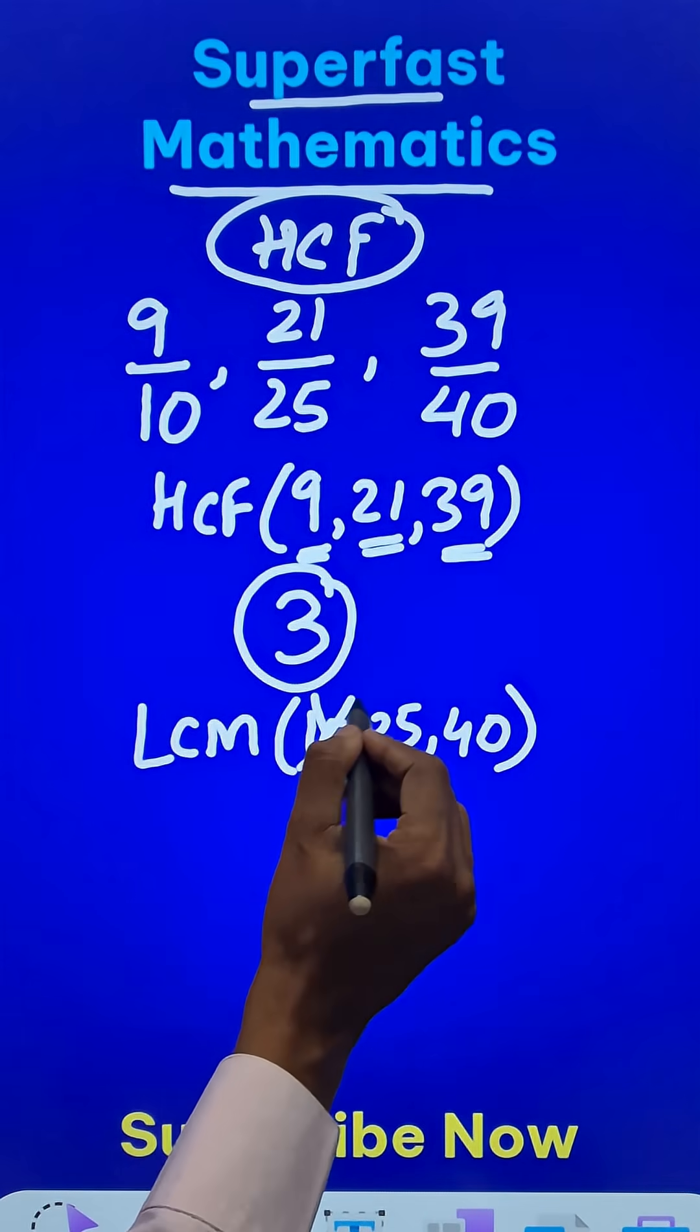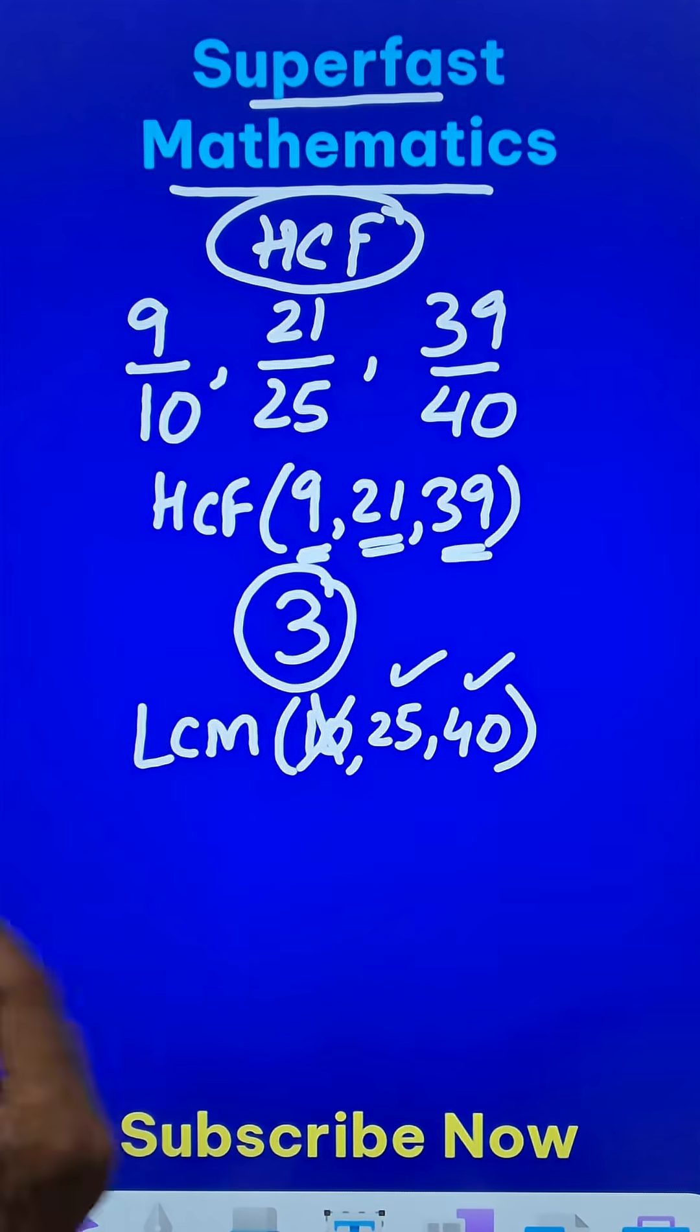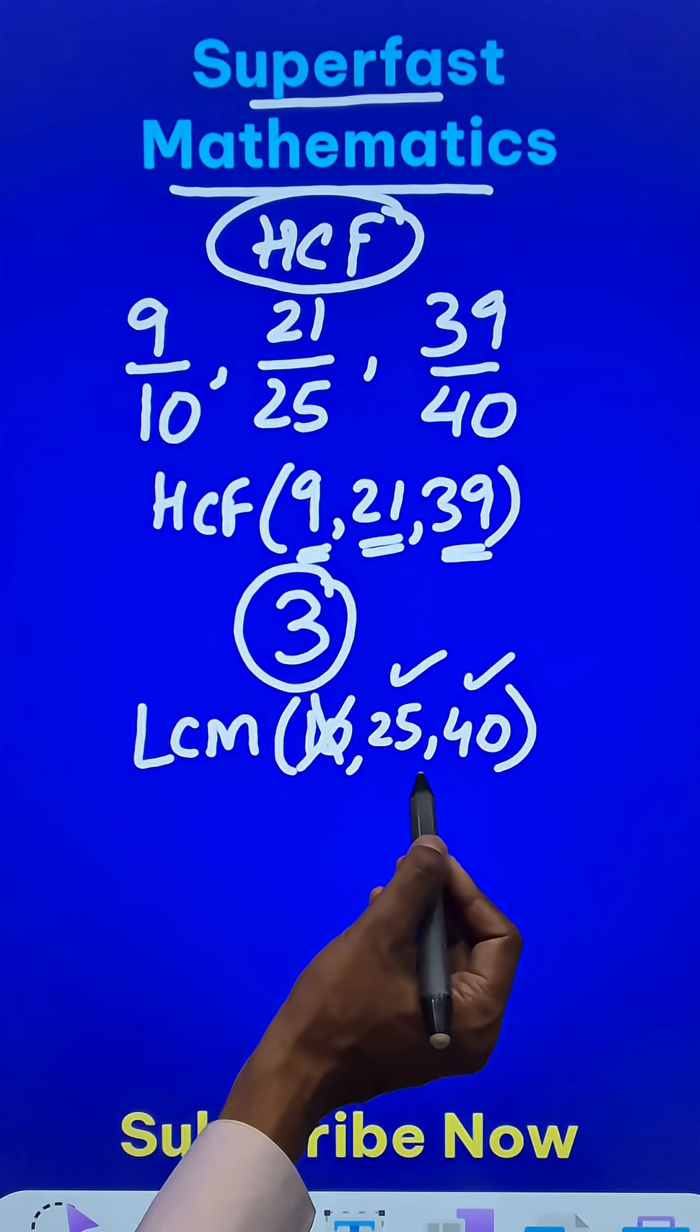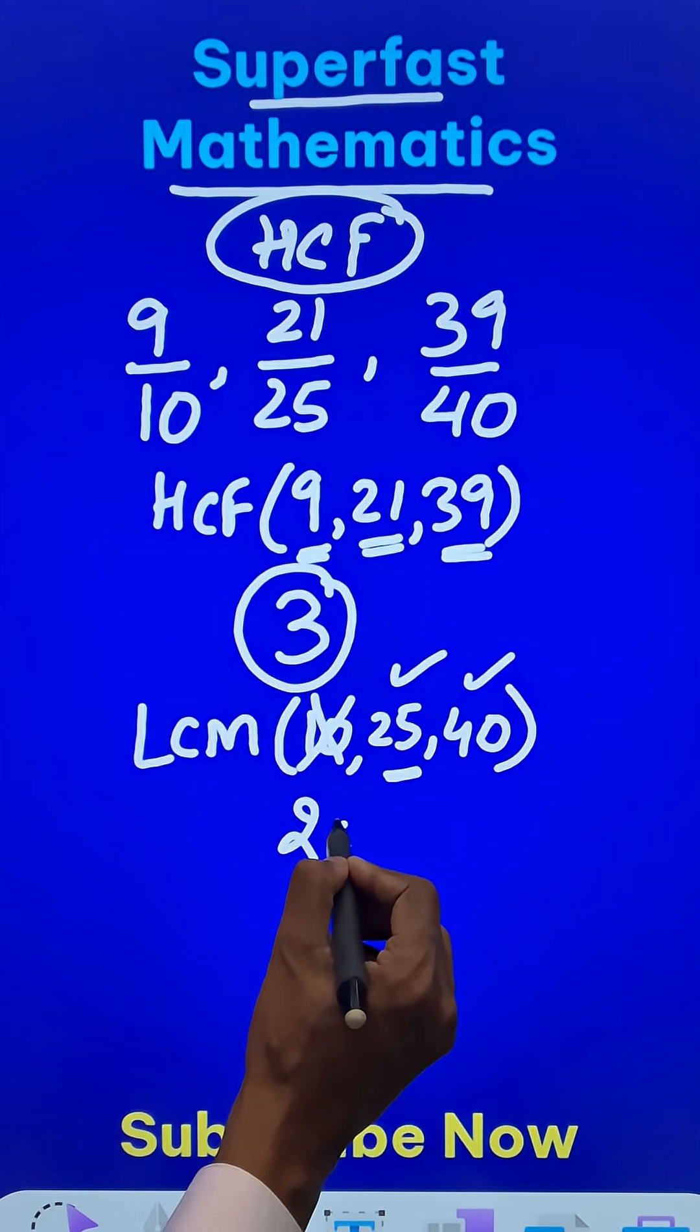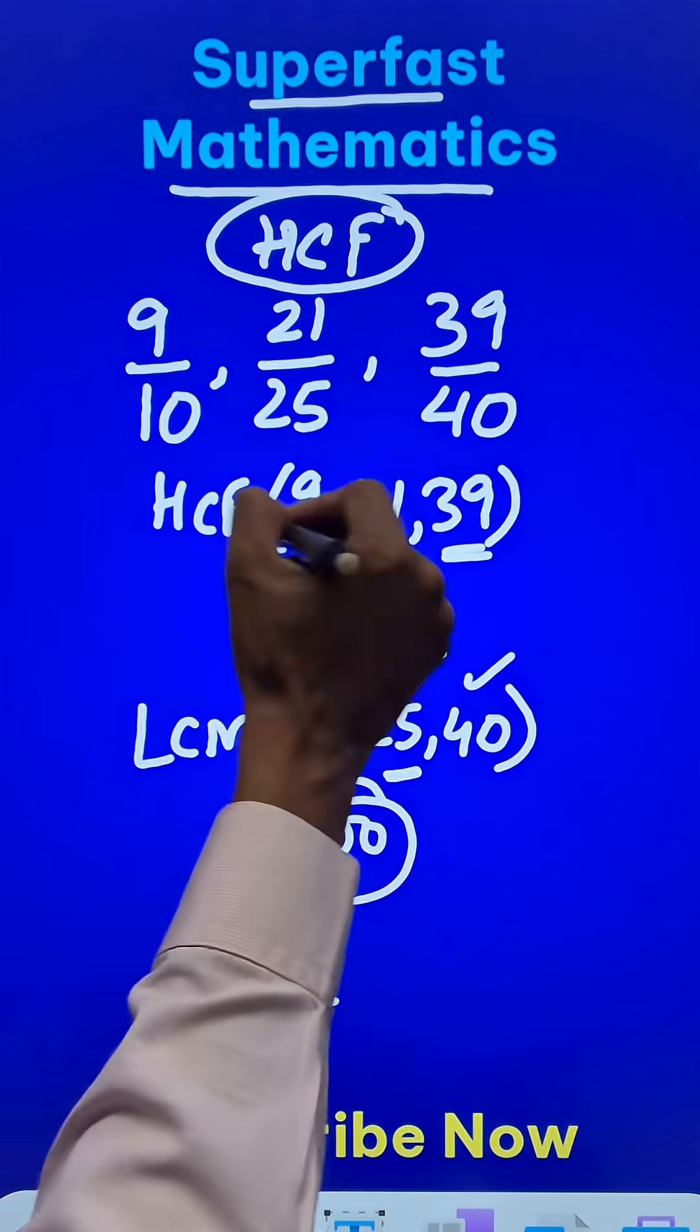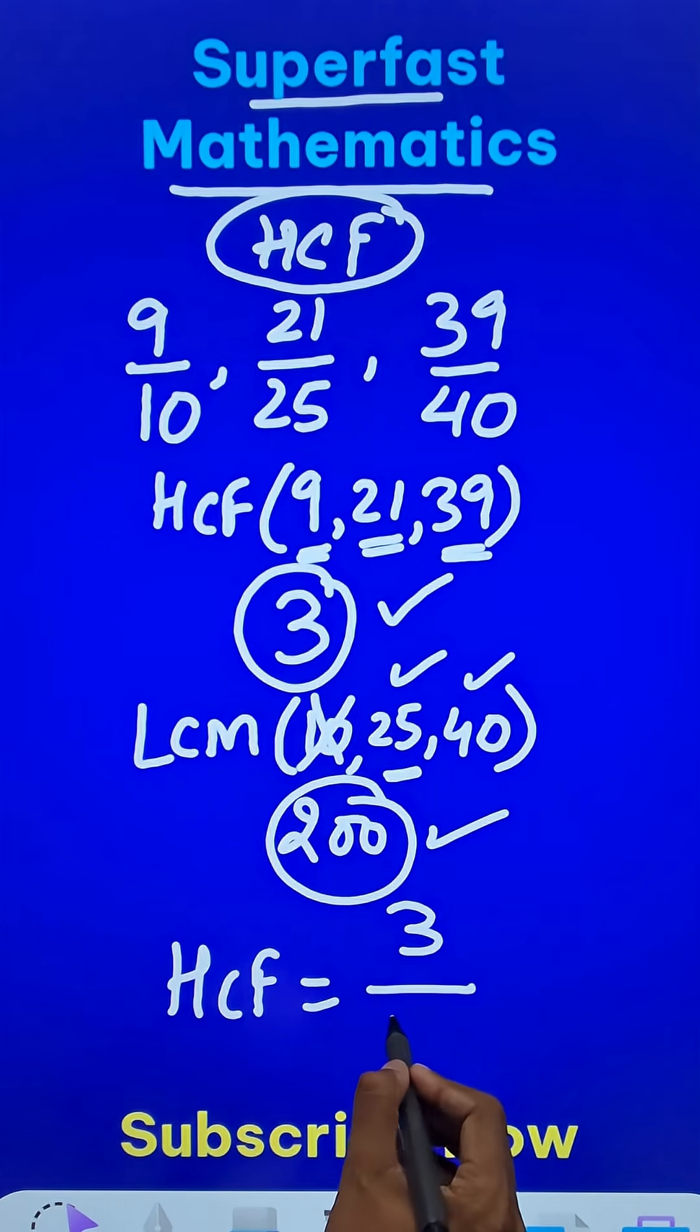40 is cancelled out because 40 is divisible by 10. Therefore, for 25 and 40, the LCM will be the next multiple of 40 which is divisible by 25, that is 200. And therefore, the highest common factor of all these fractions is the numerator 3 and the denominator 200.